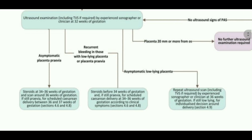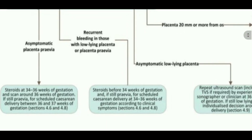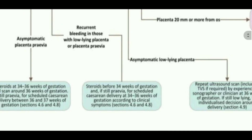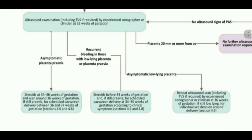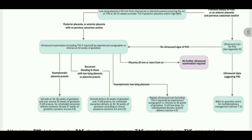For symptomatic patients in the middle group — those having recurrent PV bleeding with either low-lying placenta or placenta previa — we perform vigilant monitoring. We give steroids before 34 weeks of gestation, and if still placenta previa, we schedule cesarean section at 34 to 36 weeks according to clinical symptoms. So to summarize: asymptomatic placenta previa → C-section at 36–37 weeks; symptomatic placenta previa → consider delivery at 34–36 weeks.